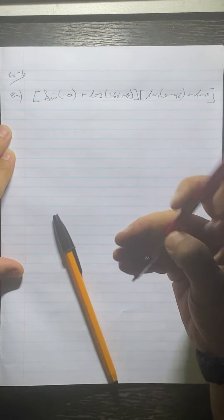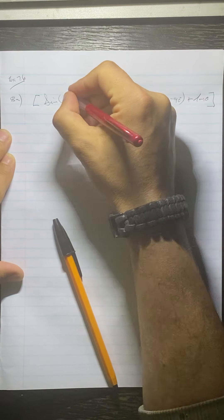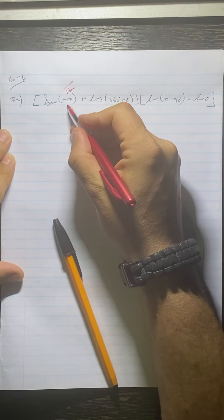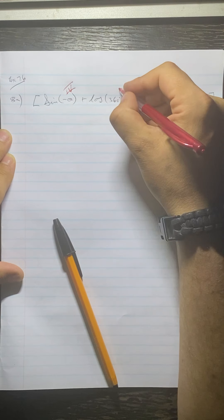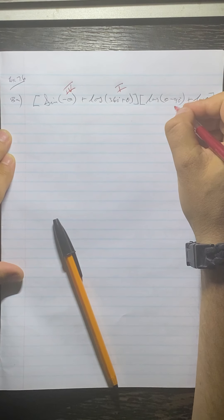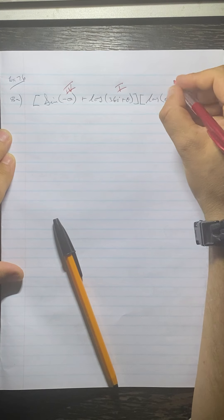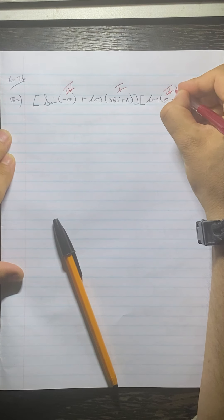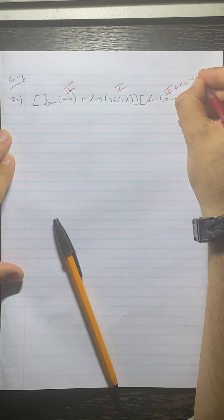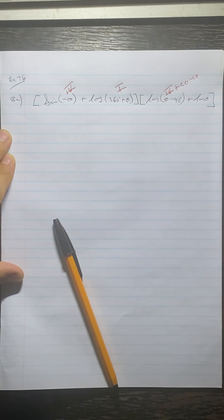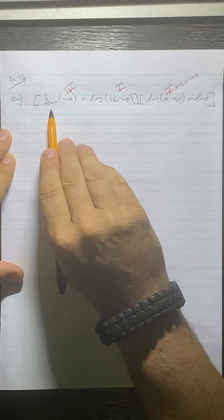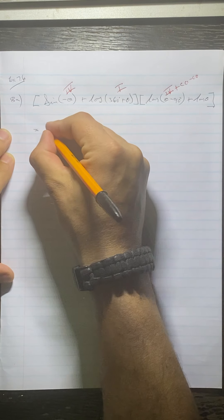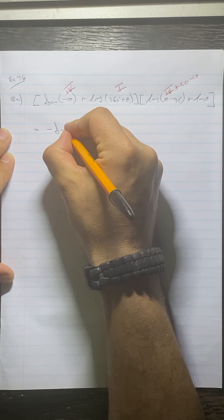My first thing I'm going to do is list what quadrants these are in. So this would be in the fourth quadrant — just remember it's negative theta. 360 plus is in the first quadrant. Theta minus 90 would be in the fourth quadrant, plus co-function because we've got the 90 degrees there. So sine in the fourth is negative, so this would be negative sine theta.